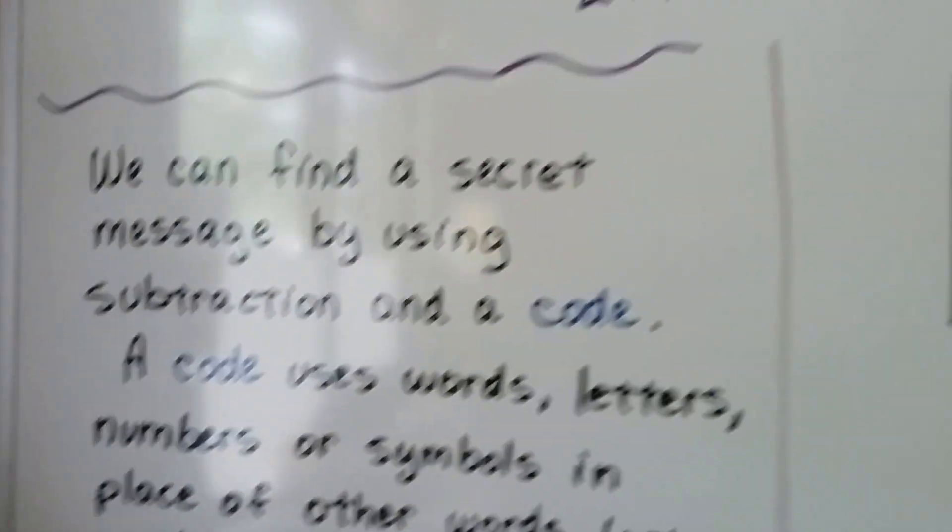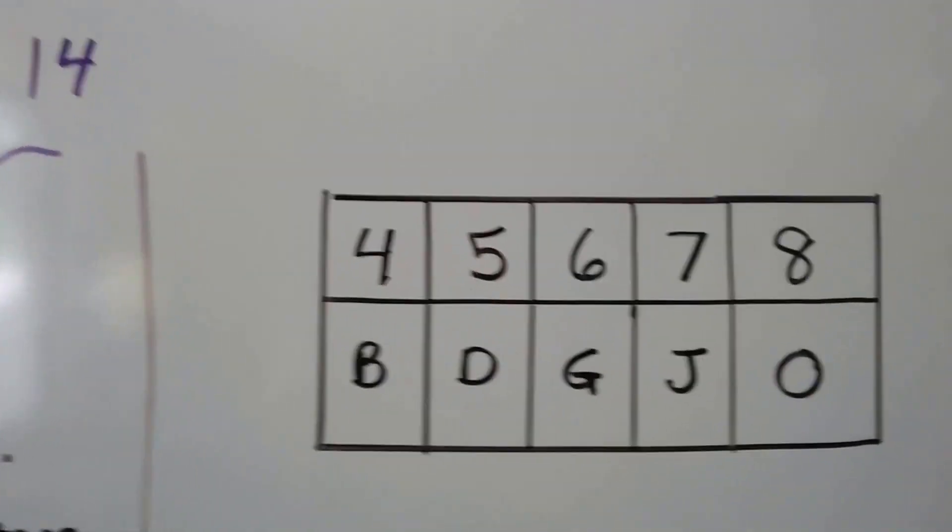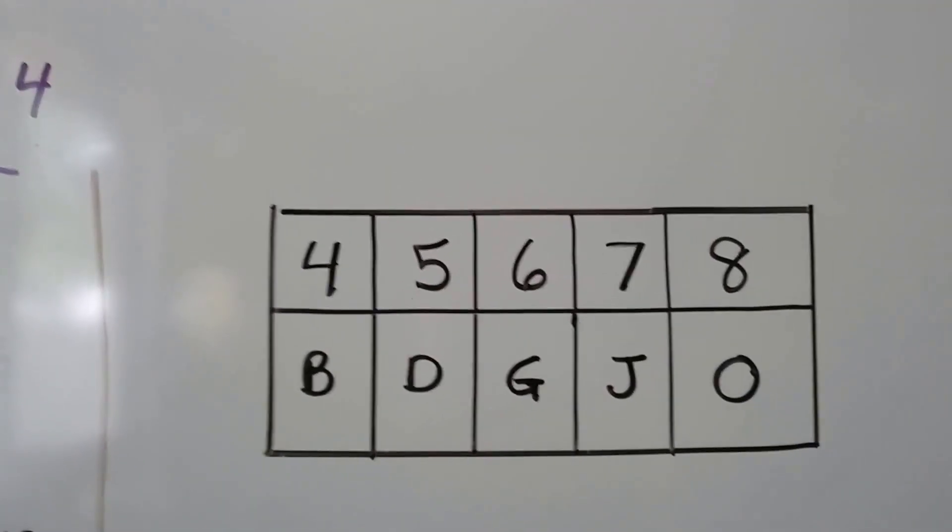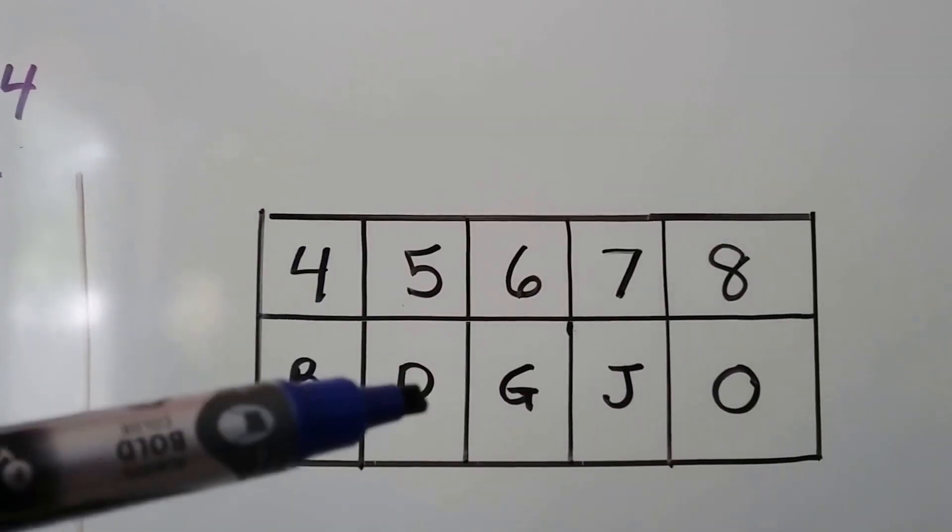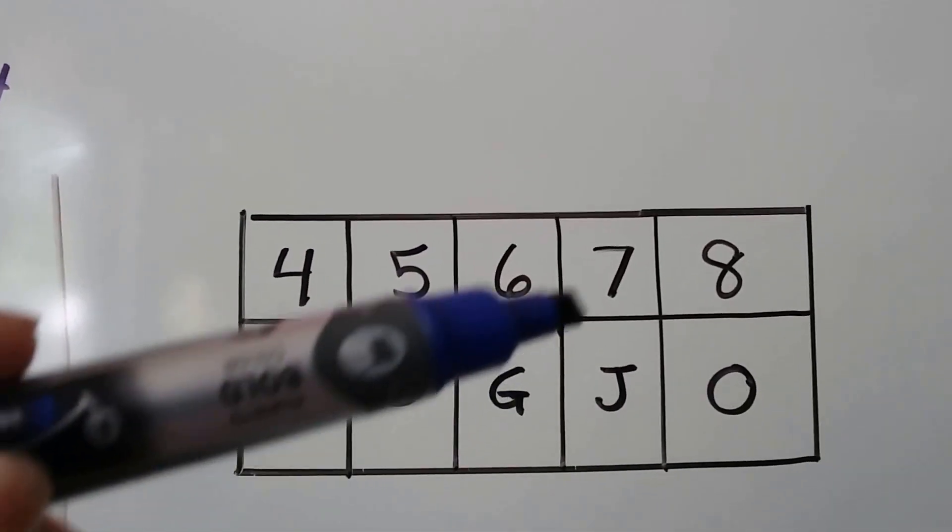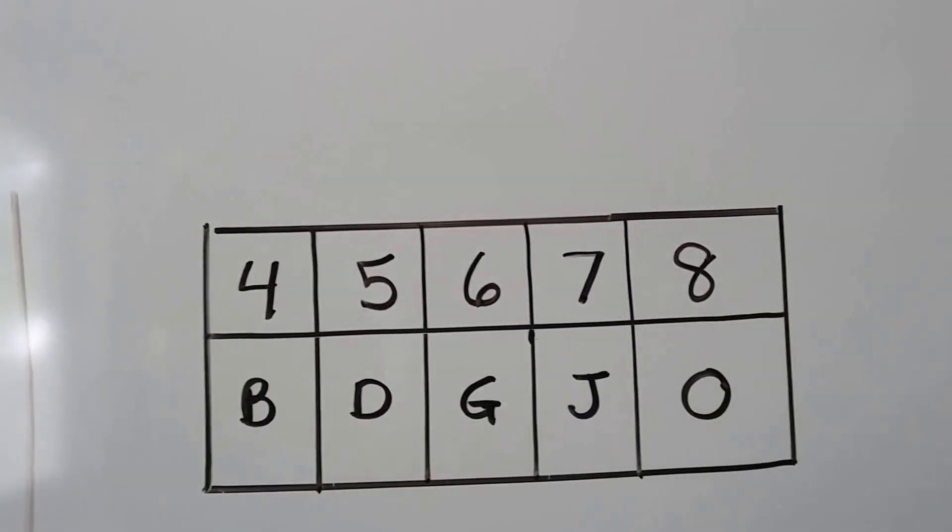So let's see if we can do this with subtraction. We have 4, 5, 6, 7, and 8, and the 4 equals a B, the 5 equals D, the 6 equals G, the 7 is a J, and the 8 is an O.